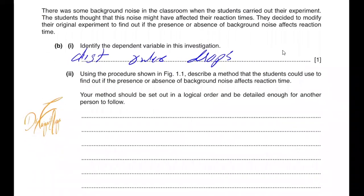There was some background noise in the classroom when the students carried out their investigation. The students thought that this noise might have affected the reaction time. They decided to modify the original experiment to find out if the presence or absence of background noise affects the reaction time. Identify the dependent variable. The dependent variable is the distance the ruler drops in the presence of the noise and the absence of the noise. The independent variable would be the presence or absence of the noise and the distance the ruler drops will be the dependent variable here.